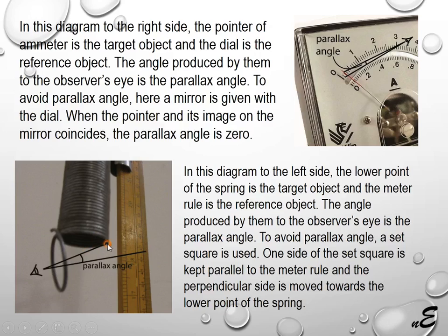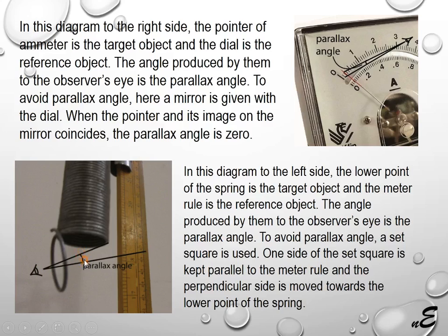Here, this is our target object — a pin. We want to measure the position of the lower end of this pin. If we observe appropriately along the correct line, the reading should be the accurate reading. But if the experimenter observes this lower end from a different position, there will be some error. The target point and the reference point create an angle to the observer's eye, and this angle is called the parallax angle.